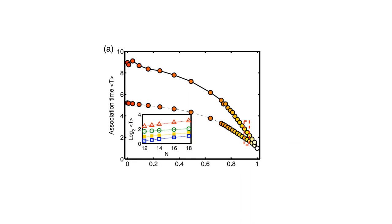The second observation concerns association time — the time required to go from an input stimulus to a stable state, measured in the simulation as the number of transient states traversed before reaching an attractor. For an asymmetric network with dilution values varied, association time decreases with increasing rho. Around rho=0.9, we again find a good optimum value: low association time combined with the higher memory capacity seen earlier.